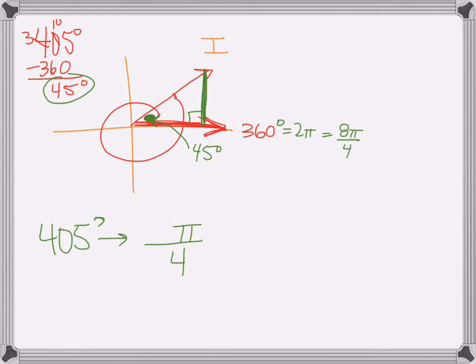So 8 pi over 4 would be 360, but I want 45 degrees over that, so I need to go 1 pi over 4 over that, so that's 9 pi over 4. So that's how we do that there.